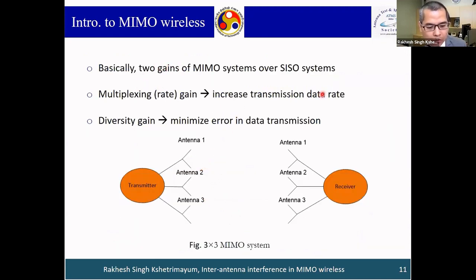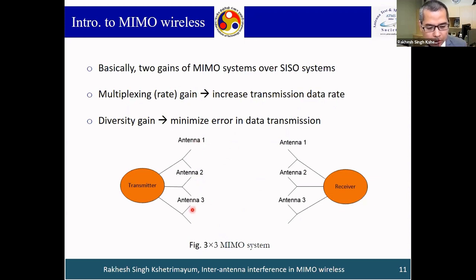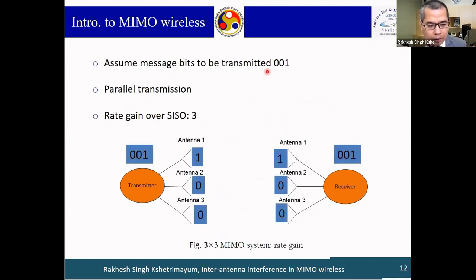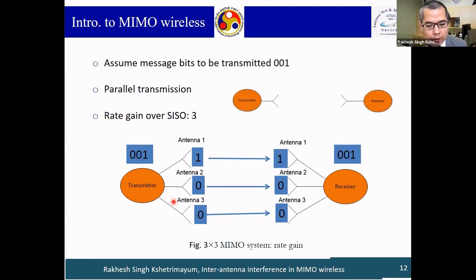Let's understand the two kinds of gain from MIMO over SISO. First is rate gain and second is diversity gain. Rate gain increases the data transmission rate; diversity gain minimizes error. Consider a 3×3 MIMO system — three antennas at transmitter, three at receiver. To transmit bits 1, 0, 0, I can send 1 from antenna 1, 0 from antenna 2, and 0 from antenna 3 simultaneously. With SISO, I would need three separate time slots. So MIMO gives a three-times speed improvement — this is called rate gain.